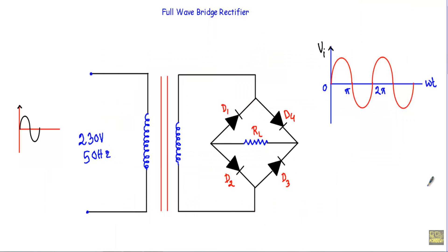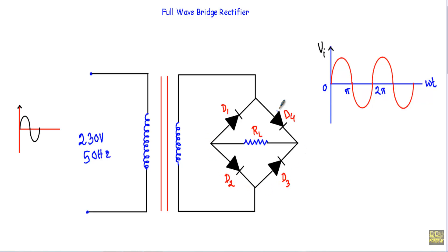In this video I will describe the operation of a full wave bridge rectifier circuit. This is called a full wave rectifier because the circuit will rectify both the positive and negative half cycles of the applied voltage, and it is called a bridge rectifier because its structure is quite similar to the structure of a Wheatstone bridge.